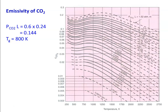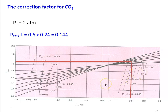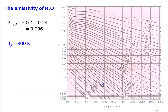For emissivity of CO2: P_CO2 × L = 0.6 × 0.24 = 0.144. At gas temperature 800 K, reading the graph gives ε_CO2 = 0.14. Correction factor for CO2 at total pressure 2 atmosphere with P_CO2 × L = 0.144: drawing a vertical line at 2 atmosphere gives C_CO2 = 1.2. For H2O emissivity: P_H2O × L = 0.4 × 0.24 = 0.096 atmosphere-meter. At T_G = 800 K, reading the graph gives ε_H2O = 0.16.